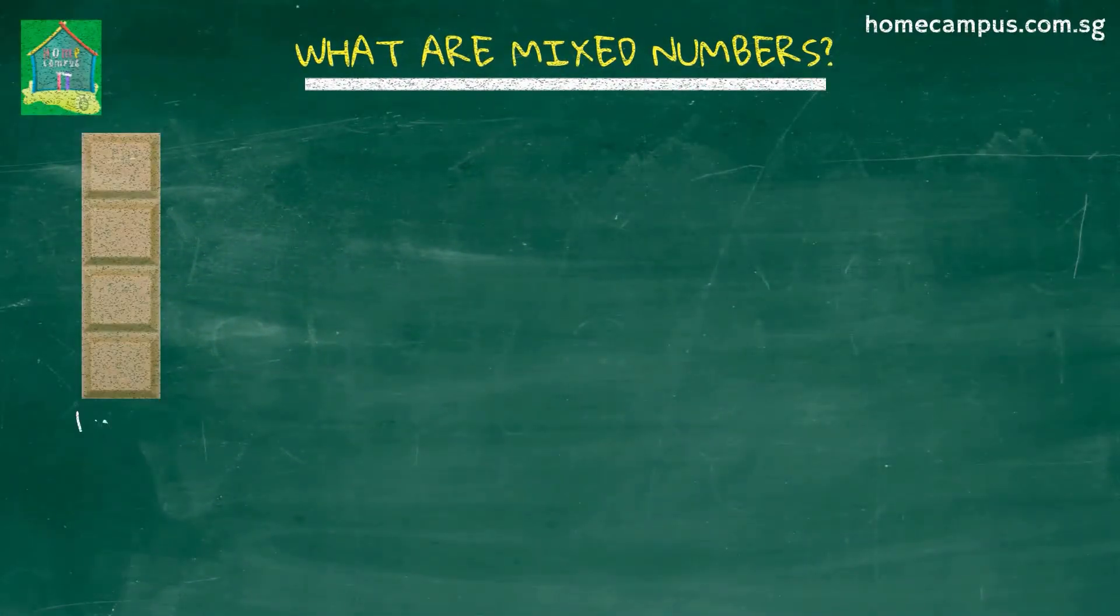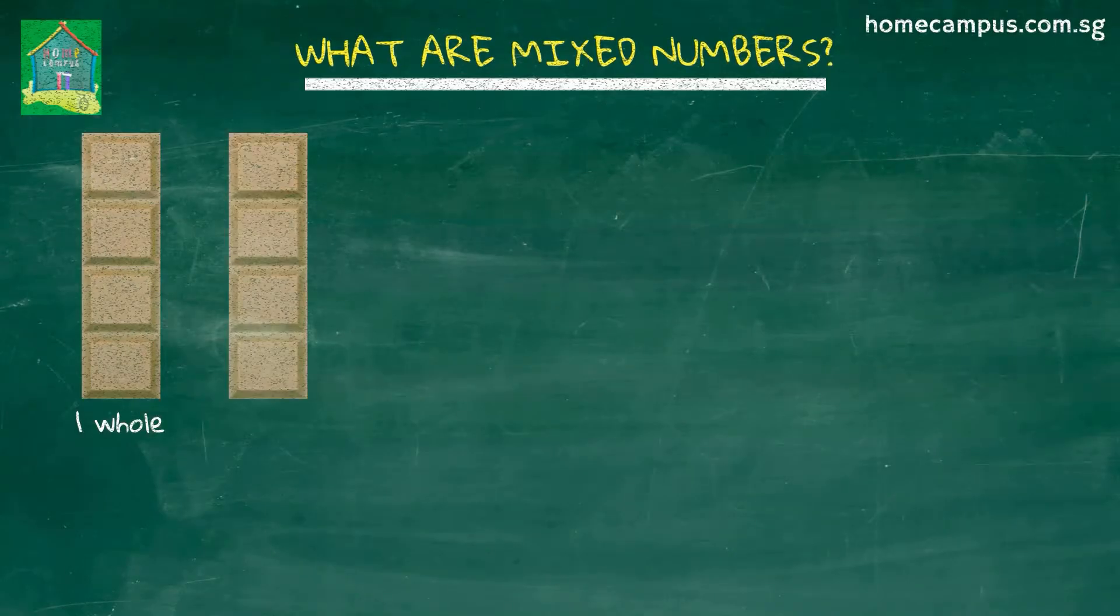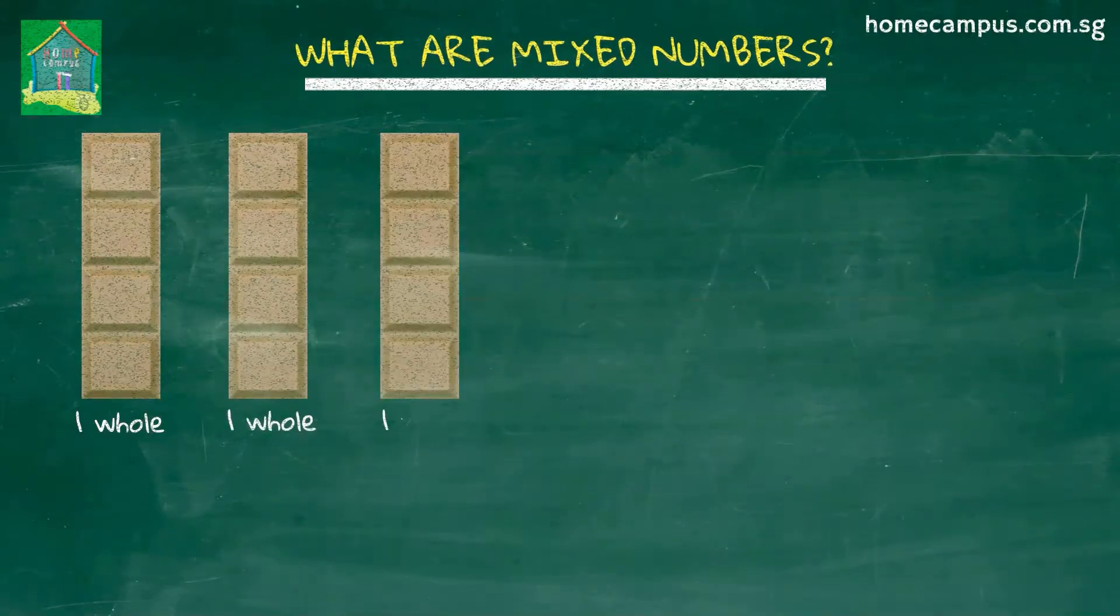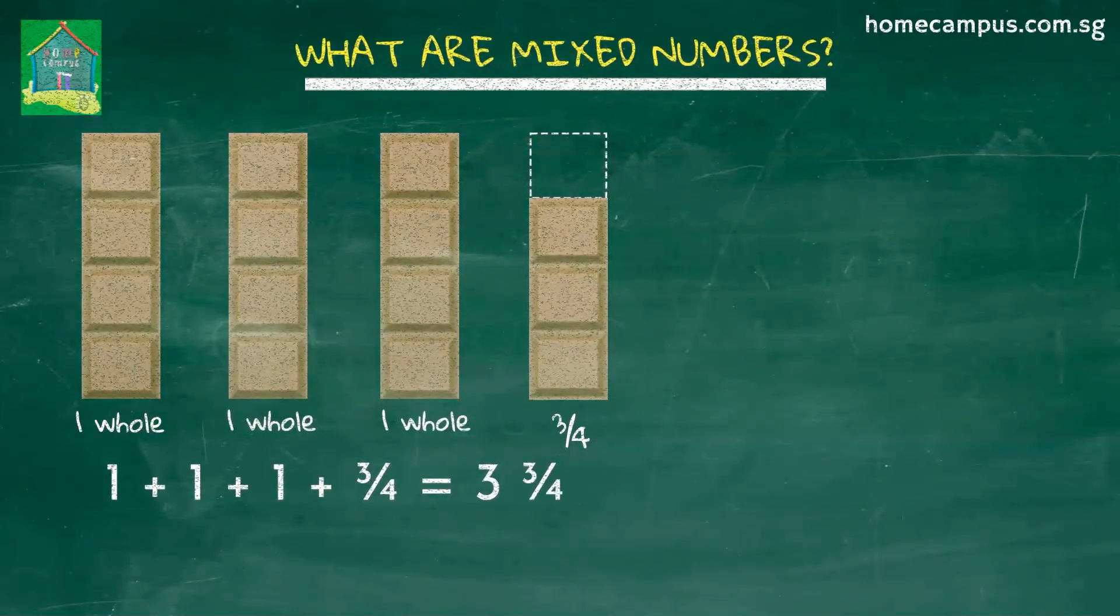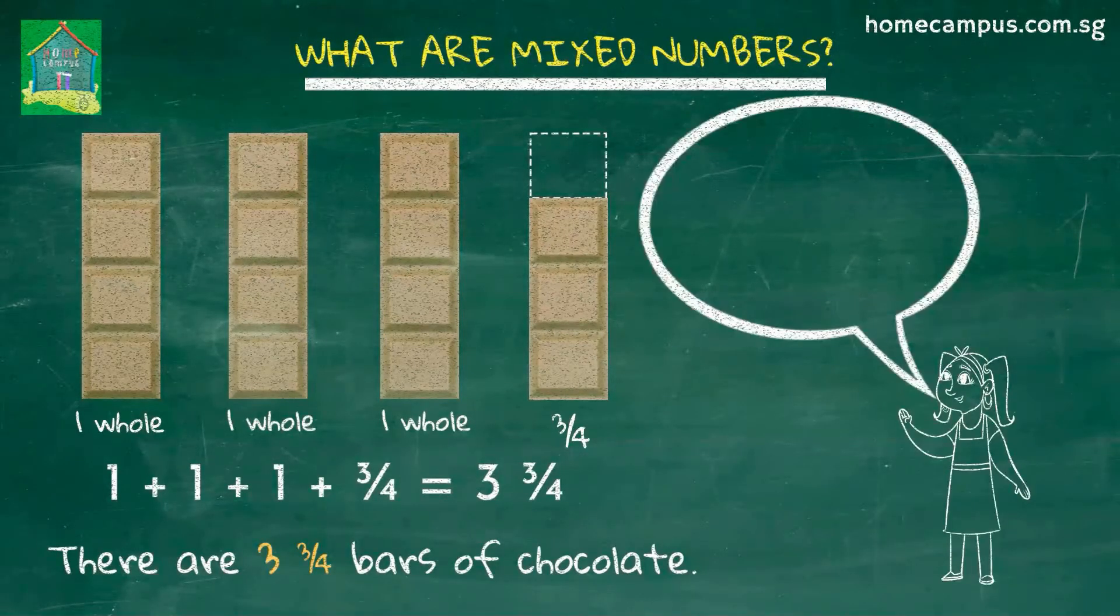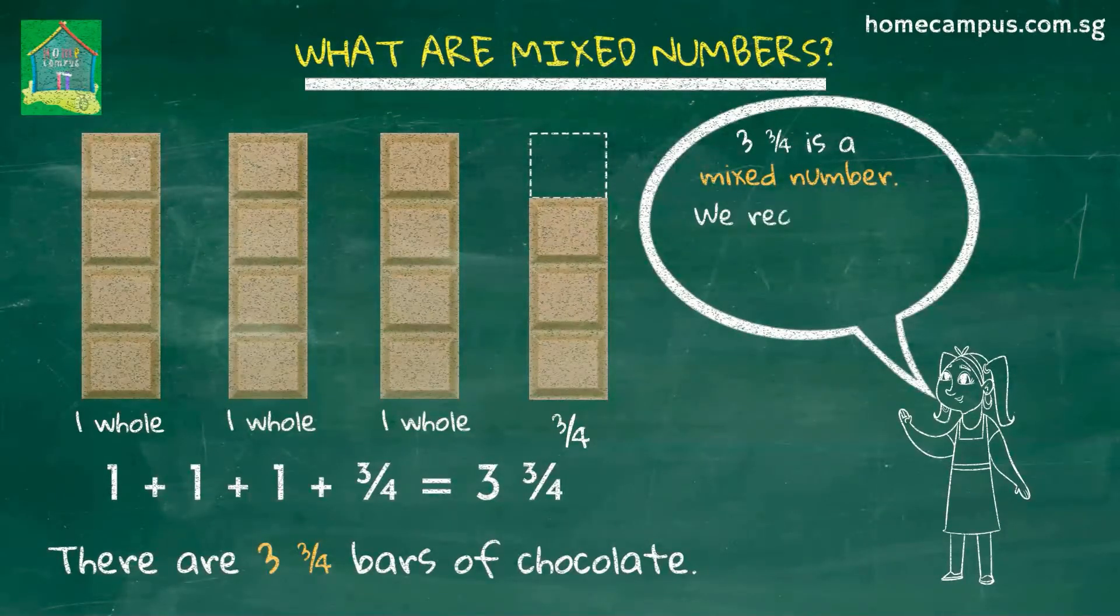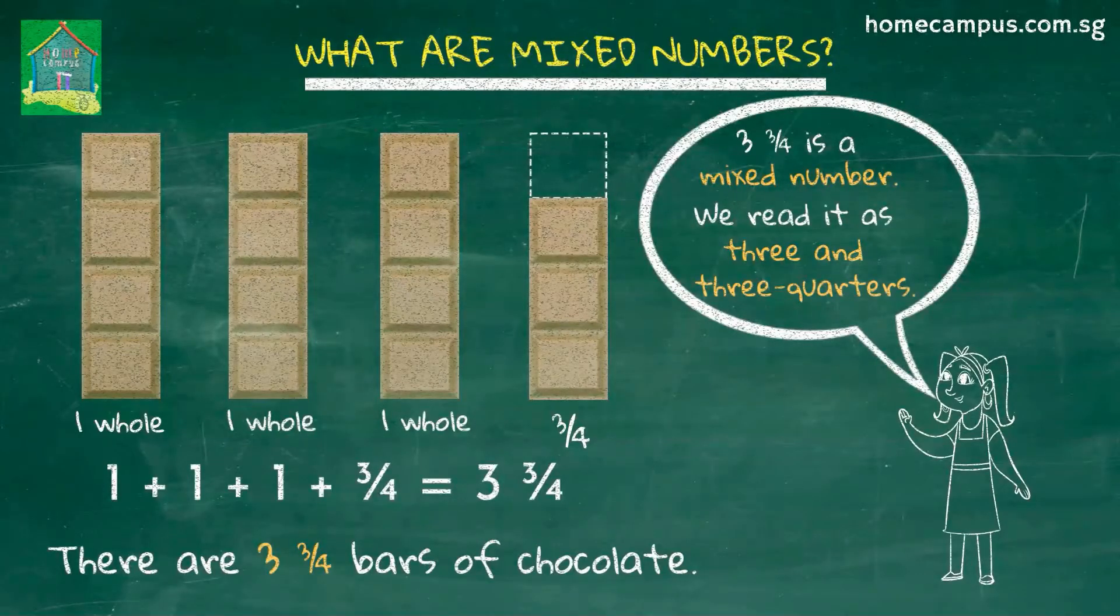Let's look at another example. Here's one whole bar of chocolate. Here are two more whole bars of chocolate. And then we have three quarters of a bar of chocolate. Together we have one plus one plus one plus three quarters or three and three quarter bars of chocolate. The number three and three quarters is a mixed number. We read it as three and three quarters.